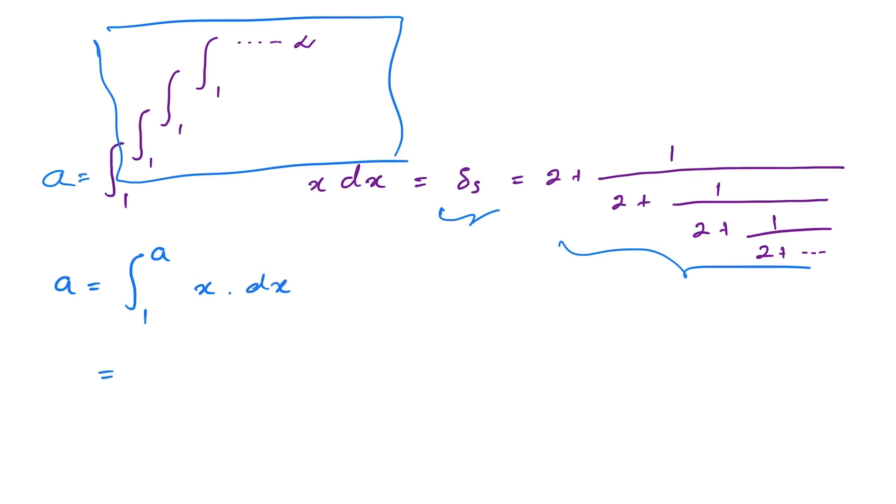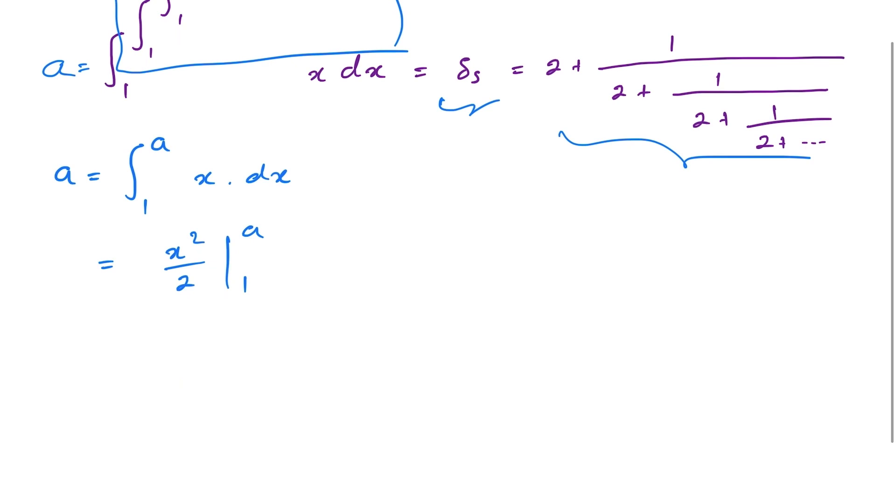If we integrate x here, we have x squared over 2, limit from 1 to a. Then 2a is equal to, if we apply the limit, we have a squared minus 1.